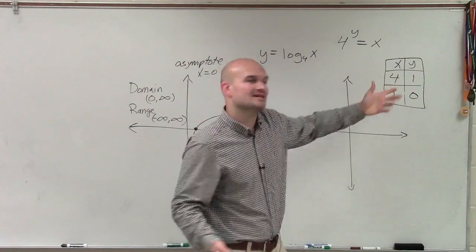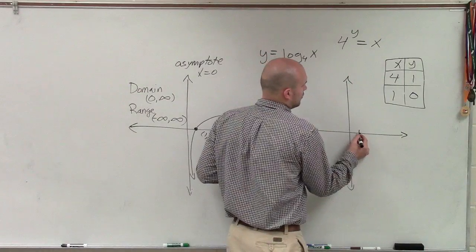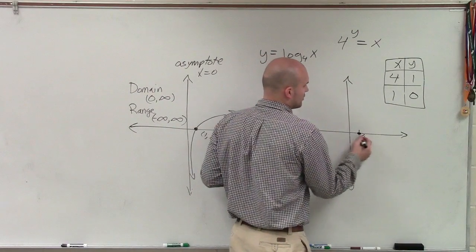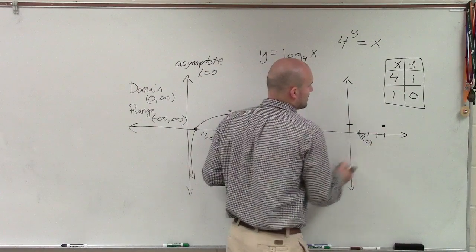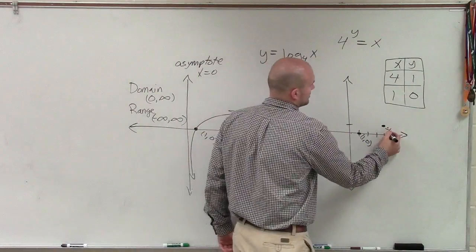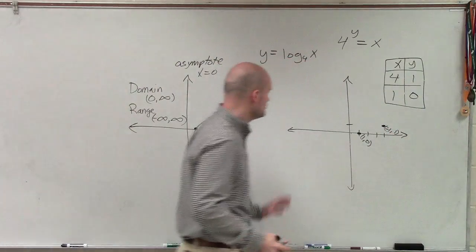So therefore, now what I've done is I've created two points: 1 comma 0, and then also 4 comma 1. So that's 4 comma 1. So therefore, those are my two points.